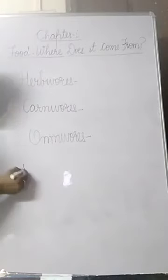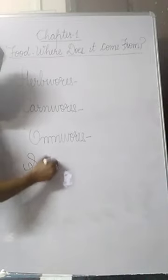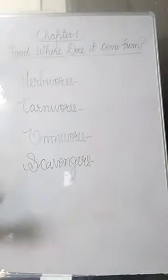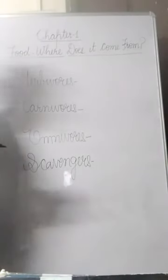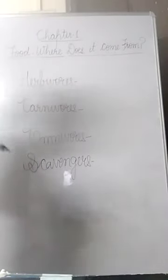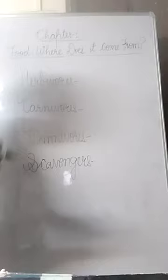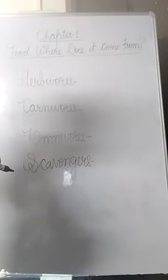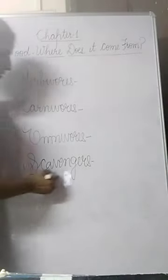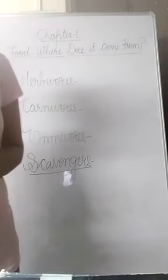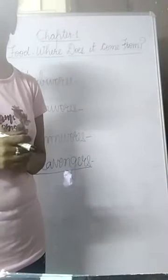One more category is scavengers. Some carnivores and omnivores are scavengers — they eat the dead bodies of other animals. For example, jackal and vulture eat the dead bodies of other animals, and we call them scavengers. So these are the categories of different animals on the basis of the food they eat. This was all about chapter 1. If you have any doubts, you are free to ask in doubt classes.